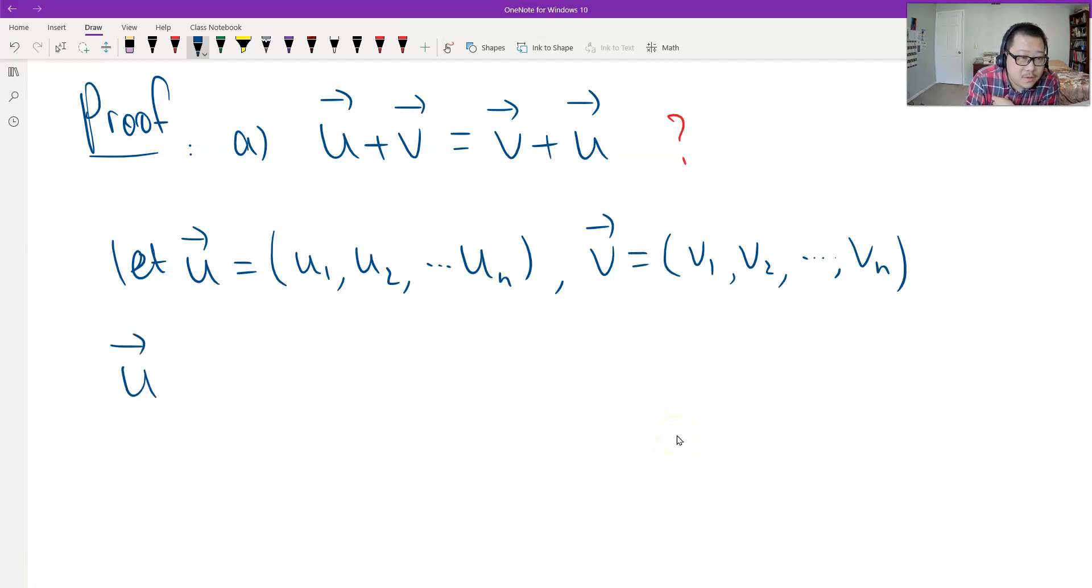So then u plus the vector v. By the definition for addition, we just add all together, one by one. So (u1 + v1, u2 + v2, ..., un + vn).